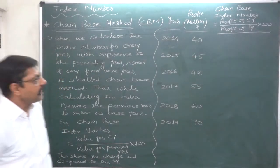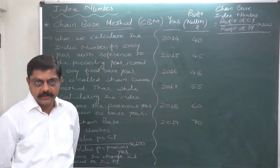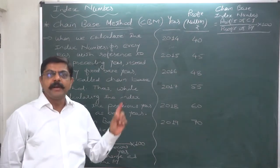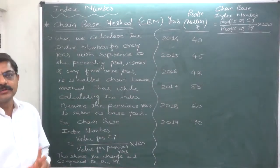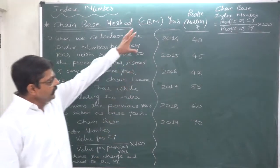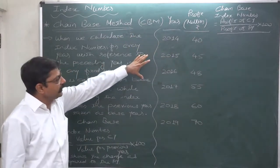So if we use chain Base index number, it will show us the change as compared to the previous period only, not as compared to any fixed base. Let's try to understand this through an example. We have data about profit in million rupees of a company.